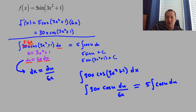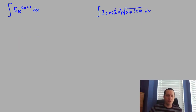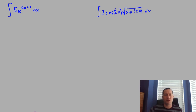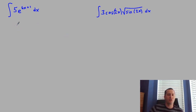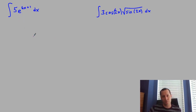Now let's go through two more examples. Pause and try them on your own if you want—I'll walk through them now. This first one is an exponential. When differentiating, the derivative of e to the stuff is e to the stuff times the derivative of the stuff, so when integrating we'll have e to the stuff.